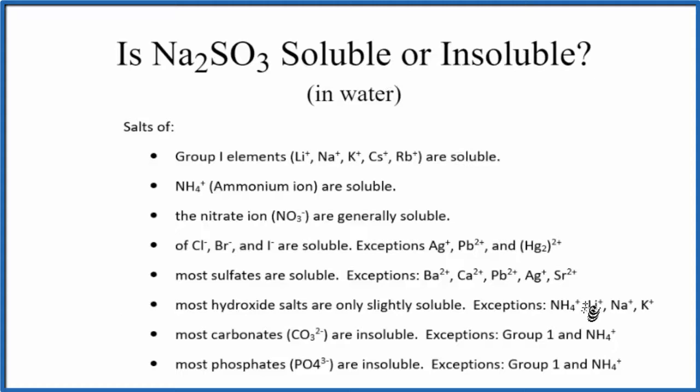We can use the solubility rules here to figure that out. The first rule is group 1 elements, group 1 on the periodic table—lithium, sodium, potassium, and so on—they are soluble.